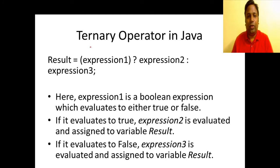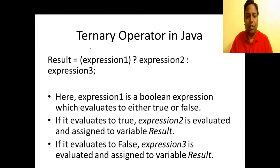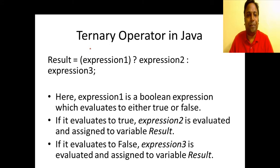Let us take a look at ternary operators in Java. We use ternary operators as a substitution for an if-else statement. Programmers may feel that an if-else statement is lengthy, so they can use ternary operators instead. The ternary operator takes this form: variable is equal to expression 1, question mark, expression 2, colon, expression 3.